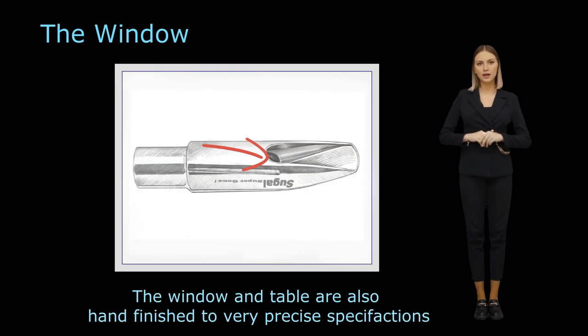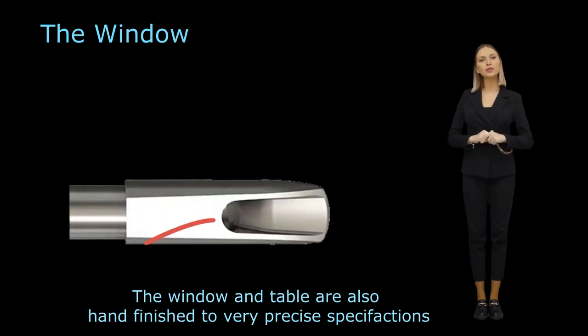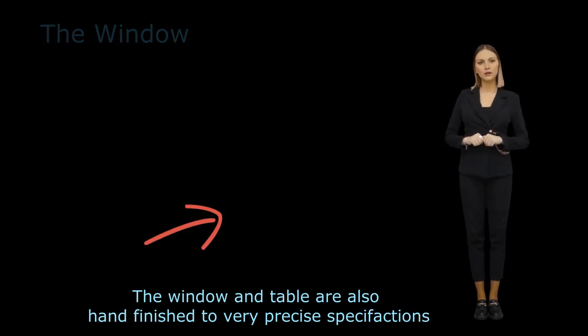The window is the open area of the mouthpiece, situated between the tip rail and the table, bounded by the two side rails.